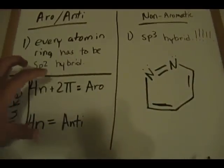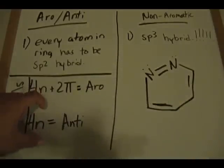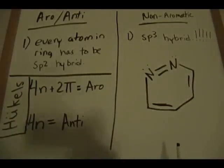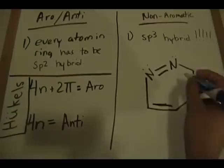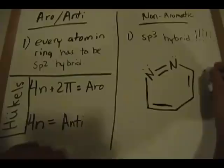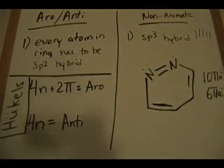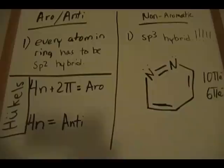Now we move to the final part — we set Hückel's formula equal to the total number of pi electrons we count from the molecule. Some people may say there are ten pi electrons: two, four, six, eight, ten. But the people who said six pi electrons understood the concept from the previous example.